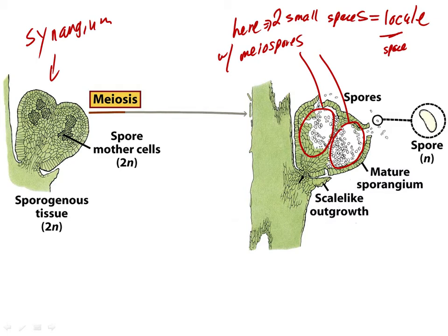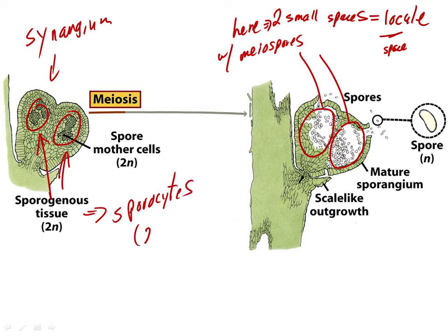We're going to see the word locule again in a number of other places. It's not always going to mean a case for myospores — any kind of small enclosed space can be called a locule; it's a descriptive term. Early on, before the formation of the mature locule, we have in the center of the synangia sporogenous tissue, which means there are sporocytes here. The sporocytes are diploid, and our spores are going to be produced from meiosis and are going to be haploid. The sporocytes are the spore mother cells.